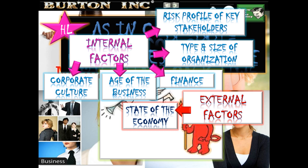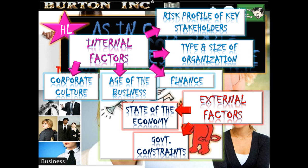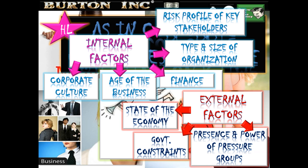Government constraints: rules and regulations can limit what a business can strive to achieve. For example, environmental protection laws may limit profit maximization due to the higher cost of being environmentally friendly — it costs extra money to deal with waste responsibly rather than simply dumping it. The presence and power of pressure groups also affect objectives: pressure groups may force businesses to review their ethical approach through lobbying and can harm a firm's image if it is not adopting a socially responsible approach.